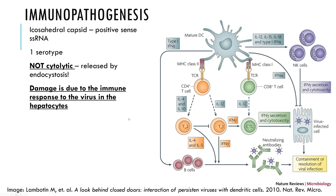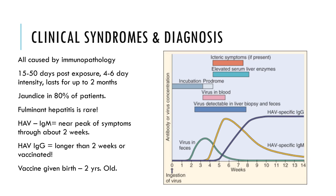HAV doesn't cause chronic infections. Eventually the immune response will clear the virally infected hepatocytes, the liver will regenerate, and you're going to be fine. Regarding clinical syndromes: everything is caused by immunopathology. The incubation period going into prodrome can be anywhere from two weeks to 50 days. Disease duration can be a week to two months. About 80% of patients develop jaundice, but less than 1% move on to fulminant hepatitis — and those patients probably had pre-existing liver issues.